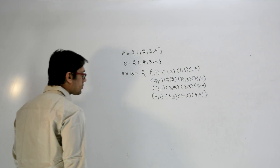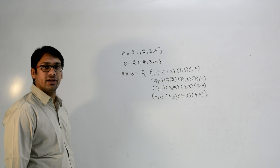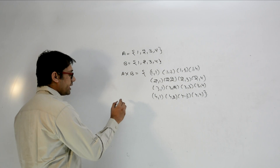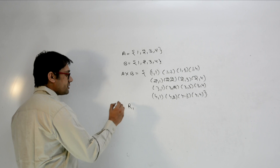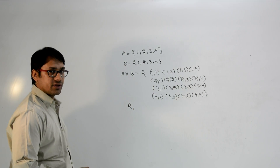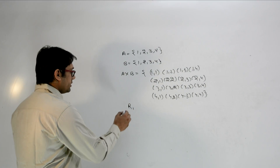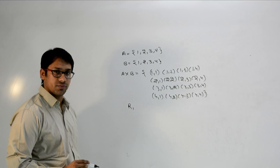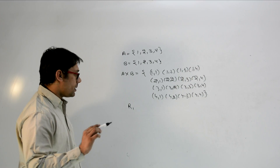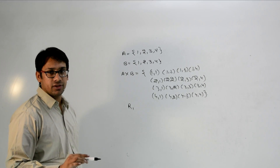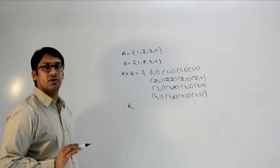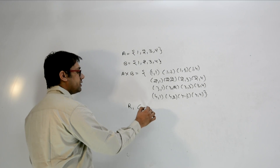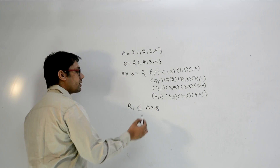Now if I define a relation over A cross B, then obviously any relation R1 defined over A cross B will always be a subset of A cross B. Even if we define any relation over any set, that relation will always be a subset of the cross product.